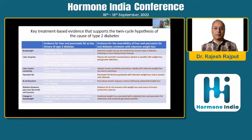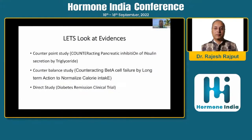Looking at the evidence for reversing the twin cycle: intensive weight loss by any method can actually reverse type 2 diabetes, including in those patients who are taking insulin therapy for a short period of time. Plasma ALT and GGT concentrations decrease in parallel with weight loss and glucose reduction. There is normalization of hepatic insulin sensitivity, and as pancreatic fat decreases, there is restoration of the first phase of insulin secretion and beta cell recovery with restoration of insulin production capacity.